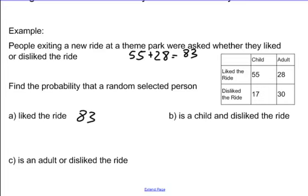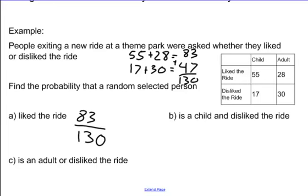We have to add up all of the people surveyed to find the actual probability. We have 55 plus 28, and then we add 17 plus 30 to get 47. Adding those together gives us 130 total people surveyed. So with 83 people liking the ride out of 130 surveyed, that is about 63%. There's a 63% chance that if you ask a random person that came out of the theme park, they liked the new ride.